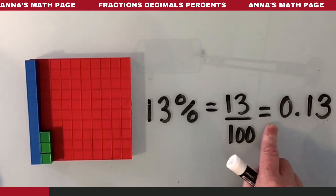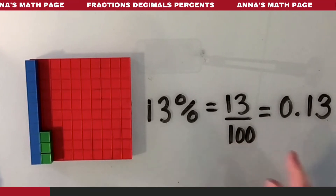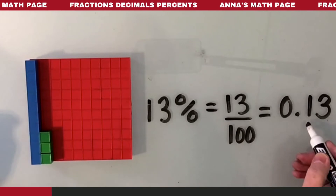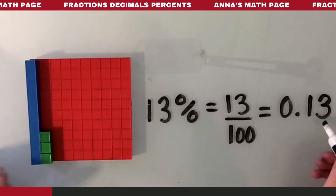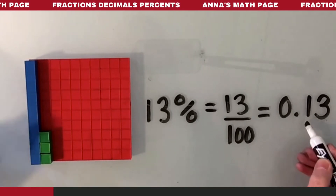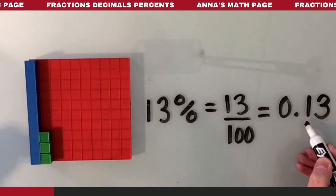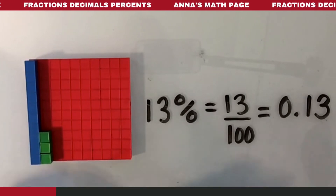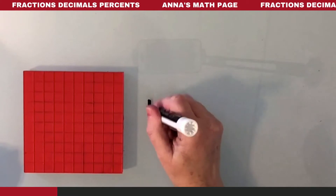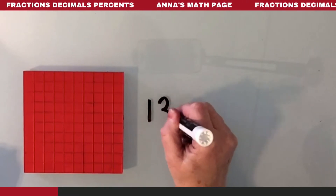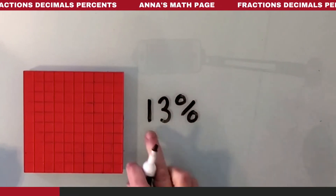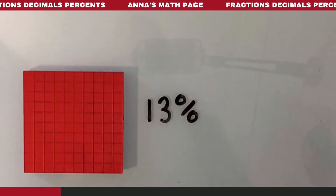And then if we want to turn it to a decimal, it's really talking about what kinds do we have. Well, we have one of the blue kind and three of the green kind — one of the tenths and three of the... that just means 13 out of 100.